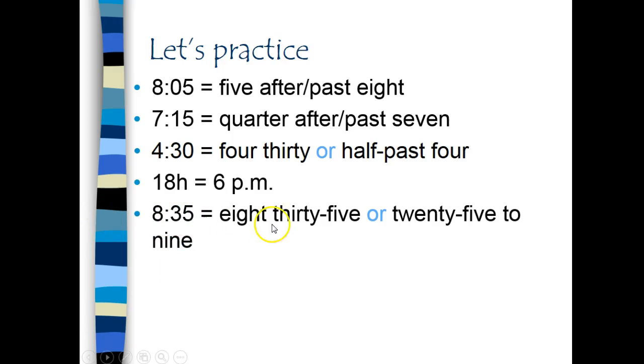8:35 is how we would say this on a digital clock, or 25 to 9. It is 25 to 9, meaning 25 minutes before 9, the hour of 9 o'clock. And the last one, 10:55 or 5 to 11.